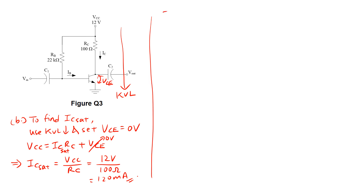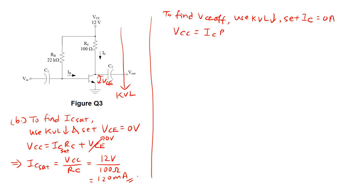To find VCE off, we also use the vertical KVL loop and set IC to 0 amperes. The equation VCC equals IC·RC plus VCE, with IC set to 0, leaves VCE off equal to VCC, which is 12 volts.